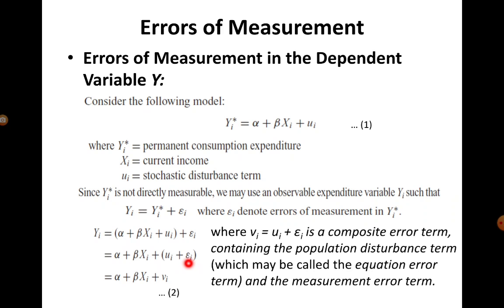Since the original model in yi* is not observable and we use yi as a substitute — where yi can be thought of as yi* plus an error term — the model we end up running is: yi = α + β·xi + vi, a composite error term. This is the model we run in effect because yi* is not directly measurable.